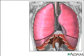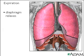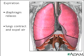The second phase is called expiration or exhaling. During exhalation, the diaphragm relaxes and the volume of the thoracic cavity decreases, while the pressure within it increases. As a result, the lungs contract and air is forced out.